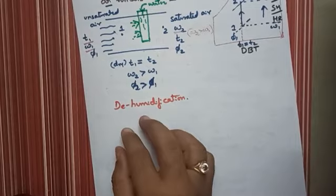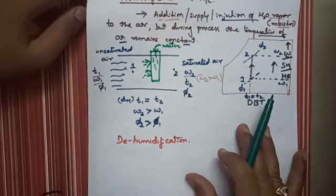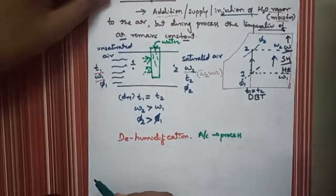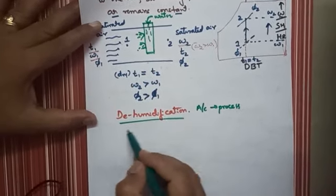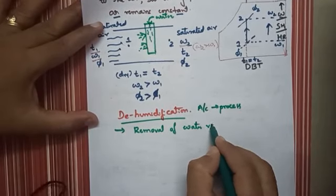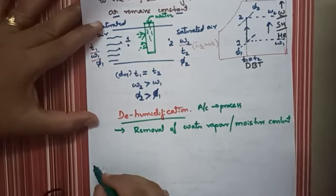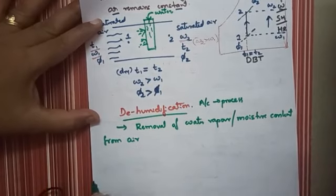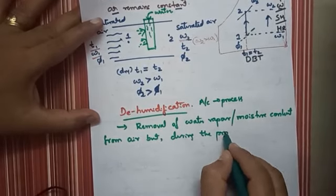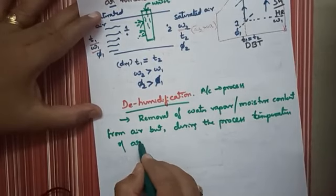Dehumidification is exactly opposite to the humidification process. It is also one type of air conditioning process. Dehumidification is defined as the removal of water vapor or moisture content from the air, while during the process the temperature of air remains constant.